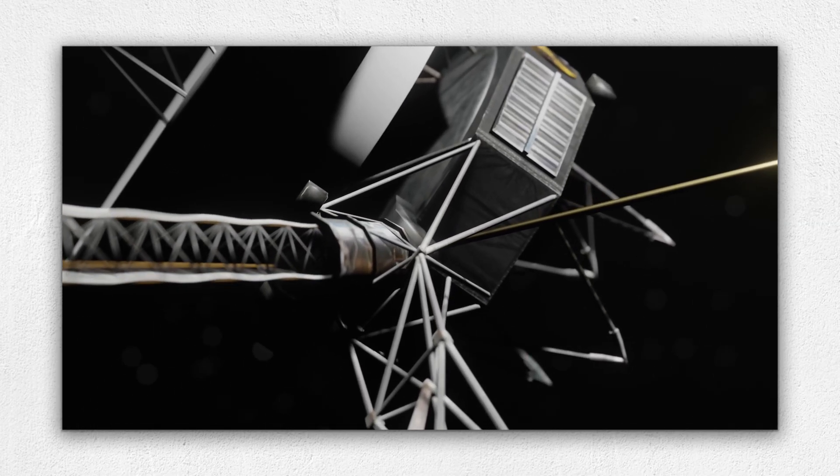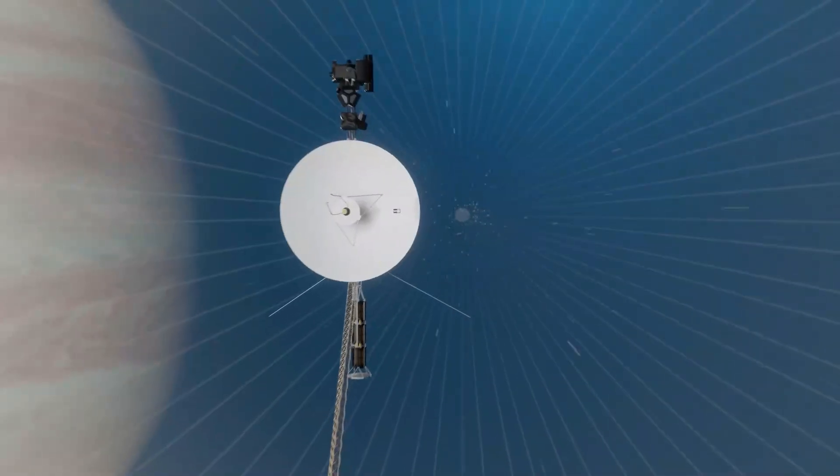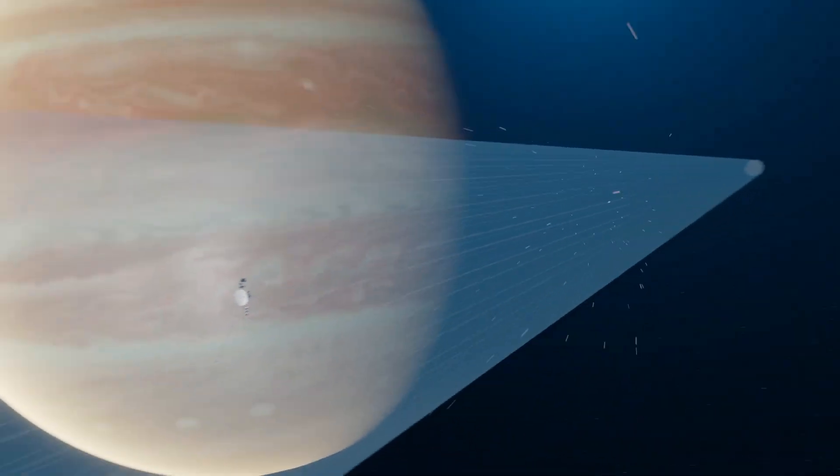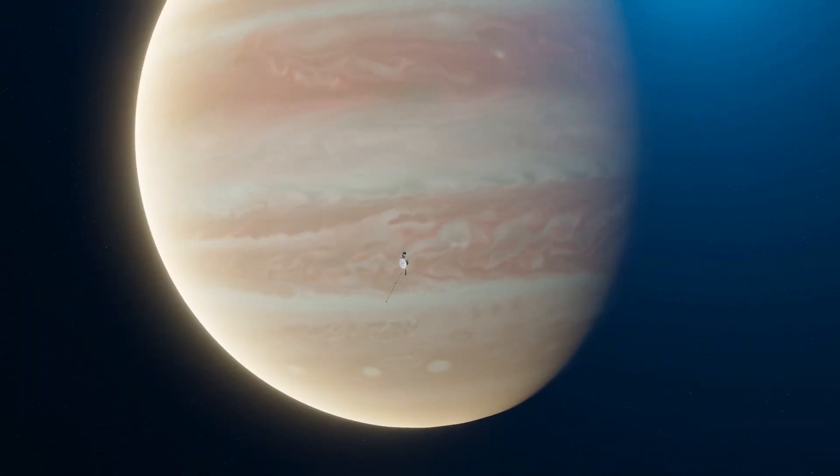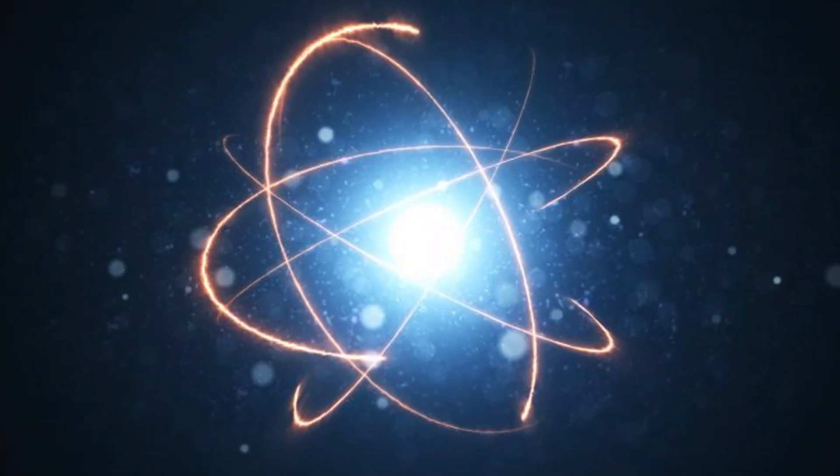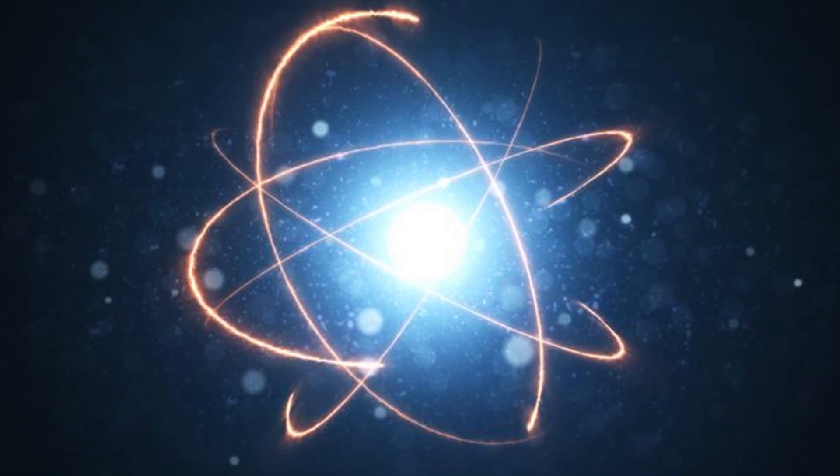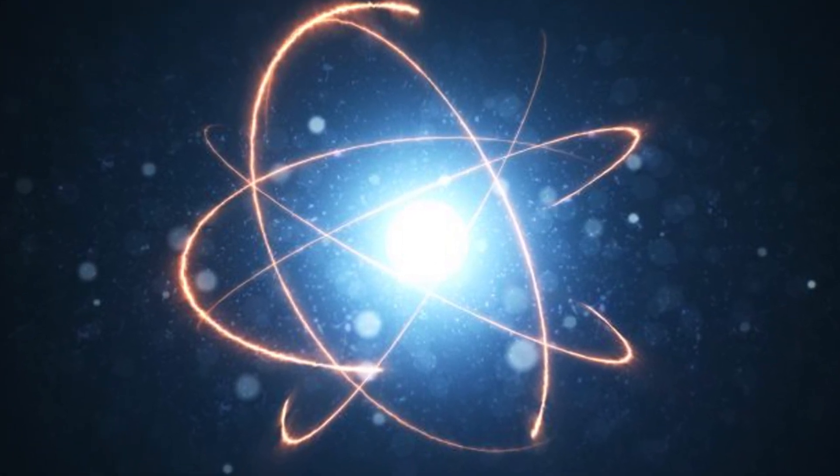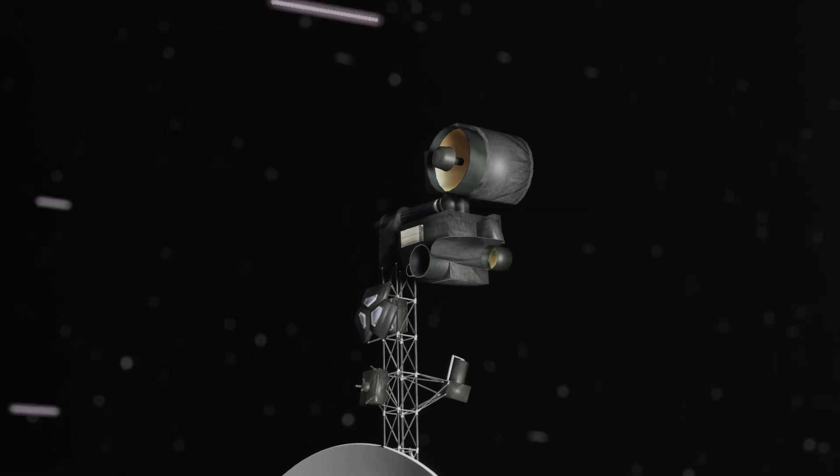A malfunction or something else? NASA engineers have, of course, considered the simplest explanation: instrument failure. Voyager 1 is nearly 50 years old, and its systems are degrading. But this explanation raises more questions than it answers.